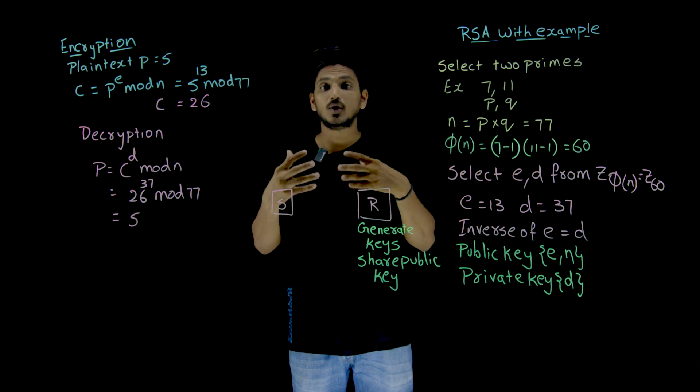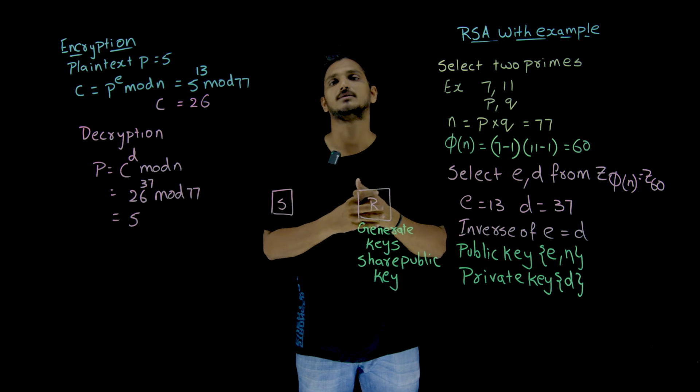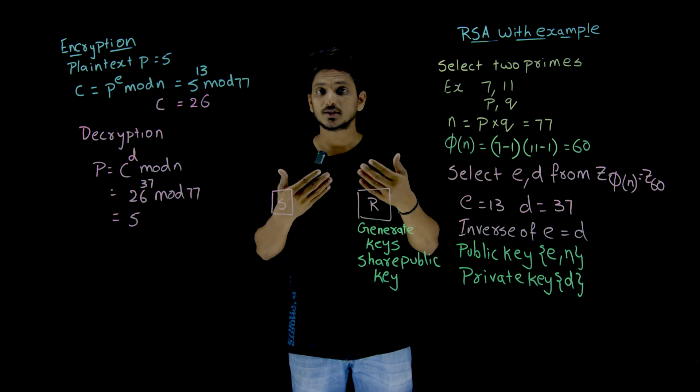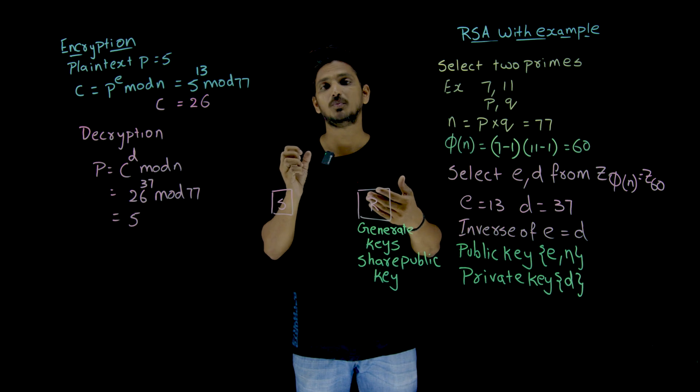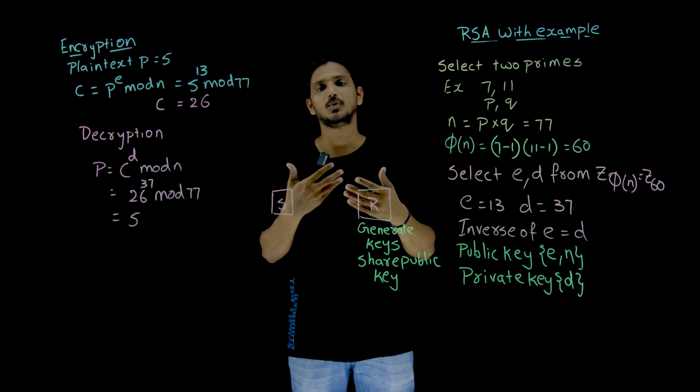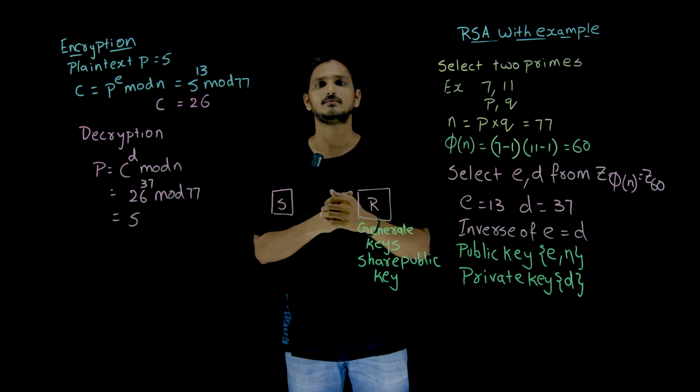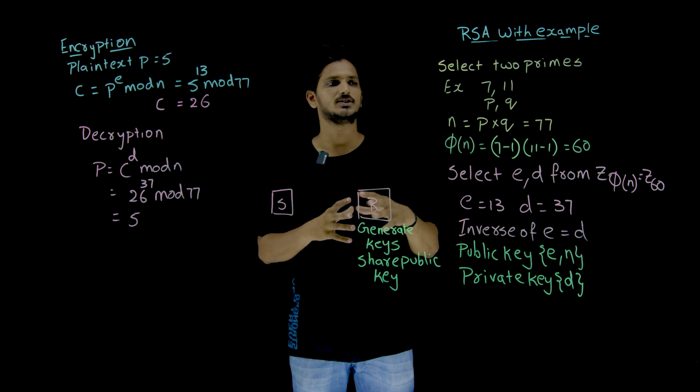When you multiply them, you are going to get an n value of 1024 bits. According to today's computation levels, the n value should be at least 1024 bits. Then only it is not possible to crack the private key. Why? All these things will be understood in our next class.